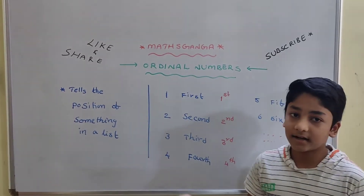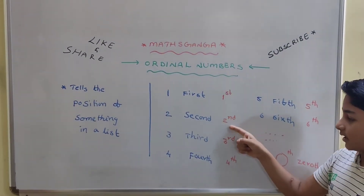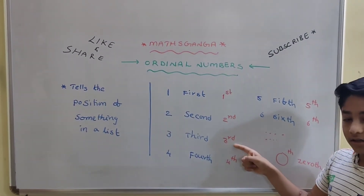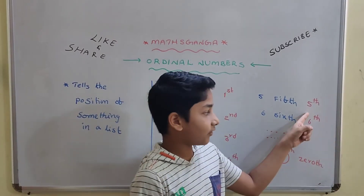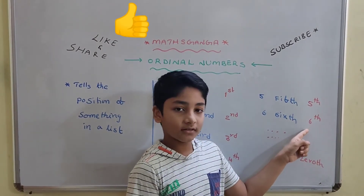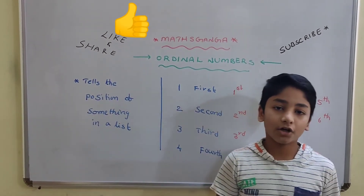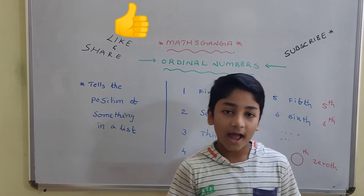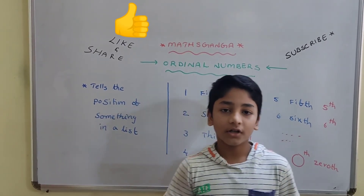And we can write them as 1st, 2nd, 3rd, 4th, 5th, 6th, and so on. And 0th is also an ordinal number for 0.